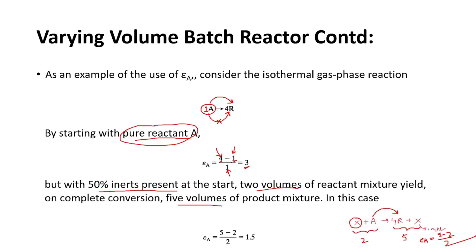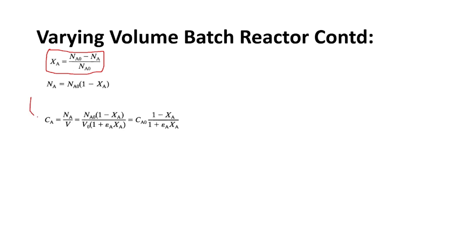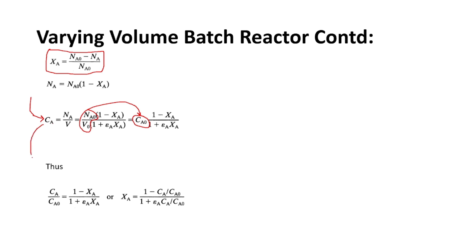Now, from the relationship between conversion and number of moles, you can rearrange to get: na = na0 · (1 - xa). The concentration ca = na/v, and substituting this, along with noting that na0/v0 = ca0, you get the concentration expression for the varying volume batch reactor, where the rest of the terms remain the same with na0/v0 replaced by ca0.